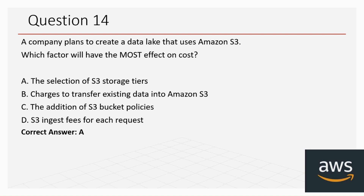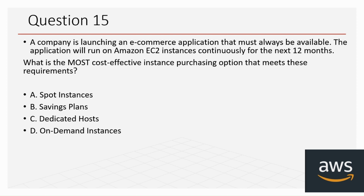Question 15: A company is launching an e-commerce application that must always be available. The application will run on Amazon EC2 instances continuously for the next 12 months. What is the most cost-effective instance purchasing option? The options are: A) Spot Instances, B) Savings Plan, C) Dedicated Hosts, and D) On-Demand Instances. The correct answer is B, Savings Plan.